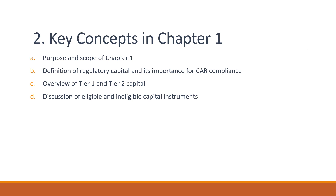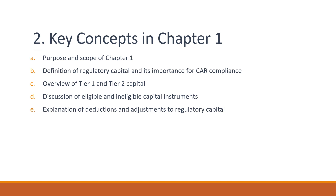Discussion of Eligible and Ineligible Capital Instruments: Eligible capital instruments are those that meet the criteria set out in the CR Framework, such as having a long-term orientation and being freely available to absorb losses. Ineligible capital instruments may include items such as intangible assets or certain types of debt. Deductions and adjustments are made to regulatory capital to account for items such as goodwill, deferred tax assets, and securitization exposures.